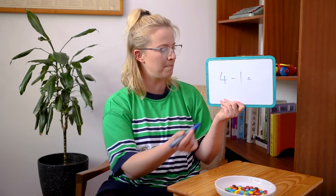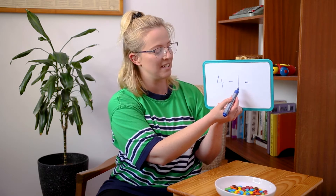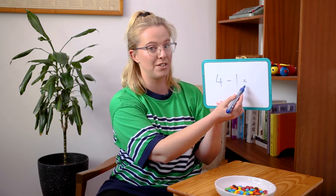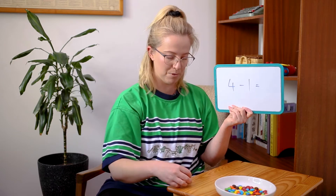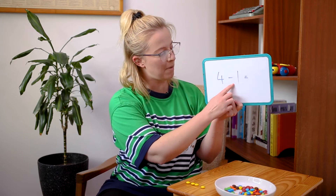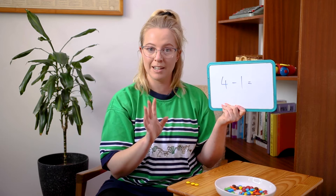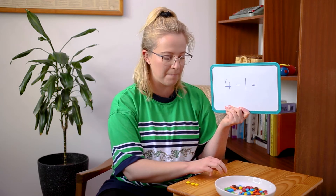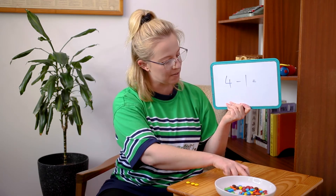Let's have a look at a few more. Here is our next equation: I have four M&Ms all together and I take away — or minus, or eat — one of them. How many M&Ms do I have left over? So let's get our M&Ms to help us. Four M&Ms — one, two, three, four — minus one. All right, how many are left over? One, two, three. Let's double check — one, two, three. Three M&Ms left over. Let's write that down.